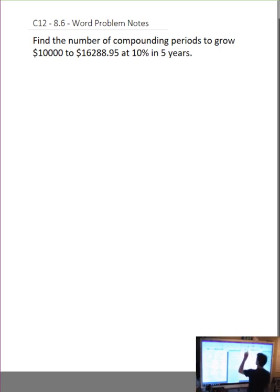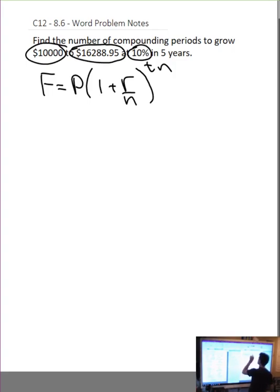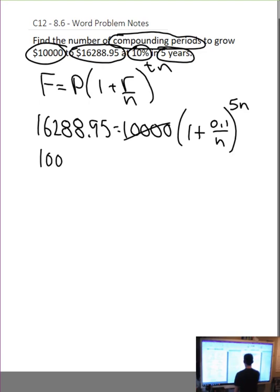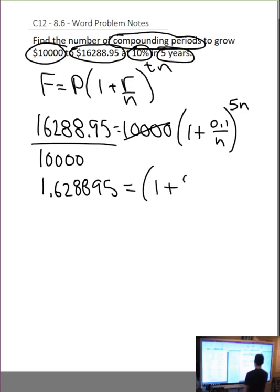Find the number of compounding periods. Interesting. Okay, so we're compounding. So, f equals p1 plus r over n to the tn. So, to grow 10,000 to this number at 10% in 5 years. And we're looking for the compounding periods. So, future value, 16288.95 equals 10,000 times 1 plus the interest rate of 0.1 divided by n to the exponent t, which is 5. We're looking, we know 5 and n we don't know.